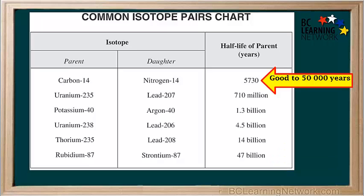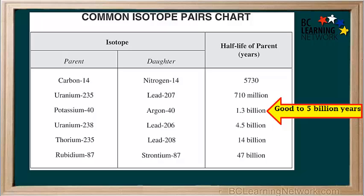Living things all contain carbon, and some of it is radioactive carbon-14. The amount of carbon-14 remaining in a sample is used to estimate the age of dead organisms. This isotope pair works well for organic objects up to about 50,000 years old. Measuring the ratio of argon-40 to potassium-40 helps geologists estimate the age of rocks up to about 4.5 billion years old — the age of the Earth.